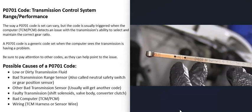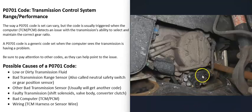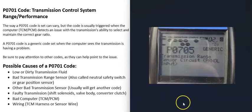The next possible cause is the transmission range sensor, which can also be called a neutral safety switch or gear position sensor depending on the vehicle. Basically, whatever it's called, it reports back to the computer what gear the transmission is in. If the sensor goes bad or has a problem, it might report incorrect information — for example, the vehicle is actually in second gear but the sensor reports third gear. Usually if this happens, you'll get an additional code like P0705 (transmission range sensor circuit). If you're getting P0705 alongside P0701, it's a good idea to test that transmission range sensor.